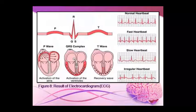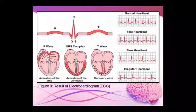The ECG shows the P wave representing atria activity, followed by ventricular activity, and recovery wave in area P. You can see there is an irregular heartbeat pattern visible on the ECG.